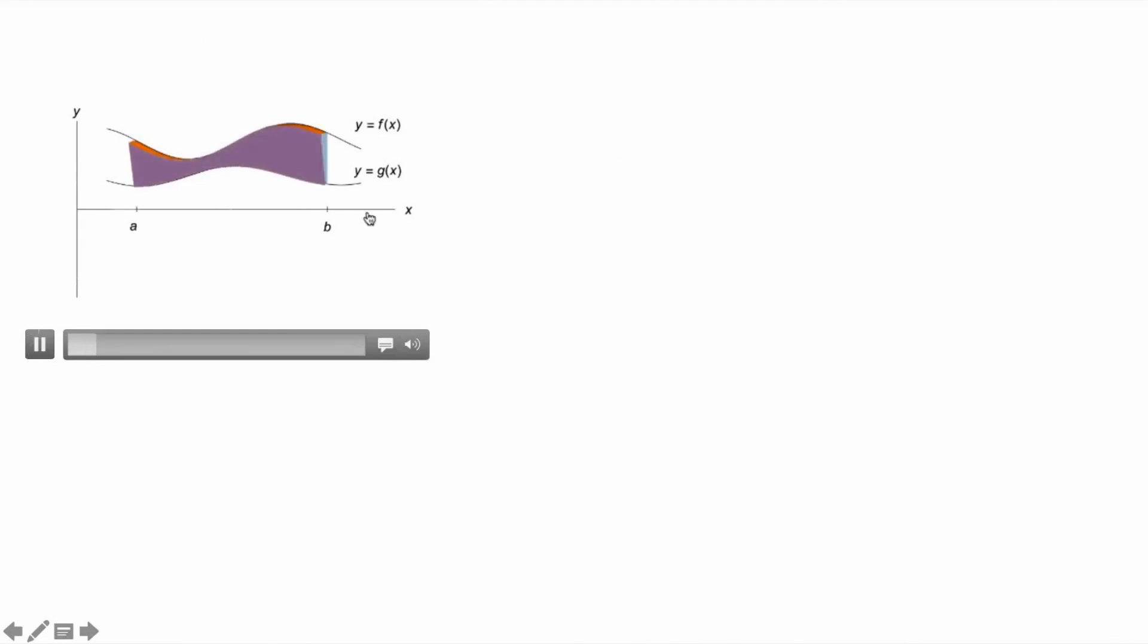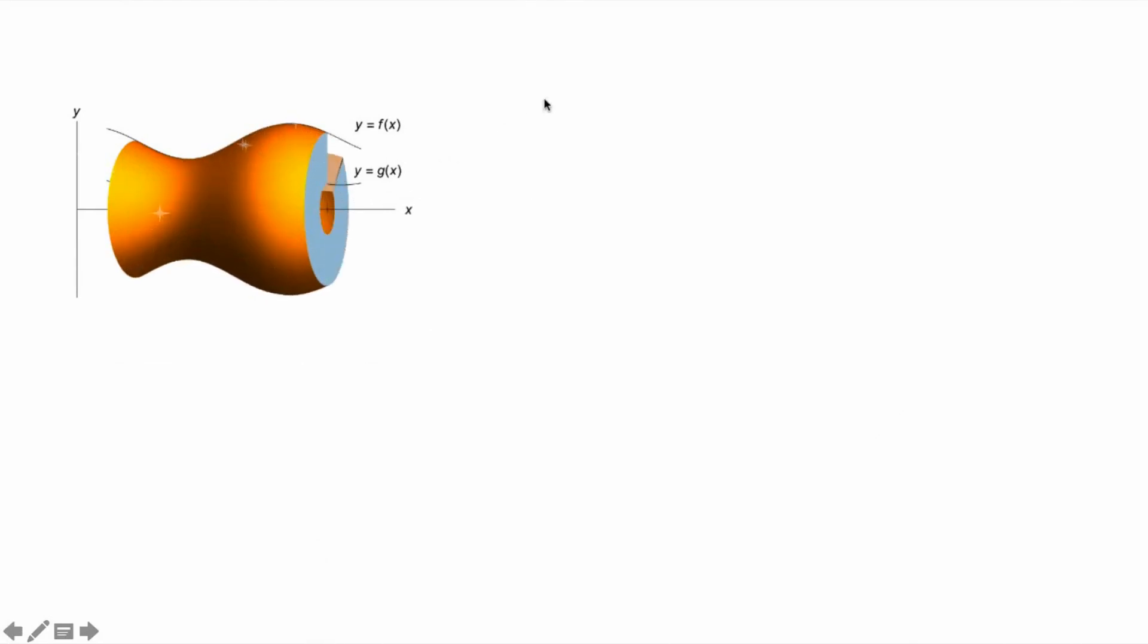Let's rotate this region about the x-axis to get the solid of revolution. This is the three-dimensional solid of revolution that is unfolding in this picture. Let's call this solid s.